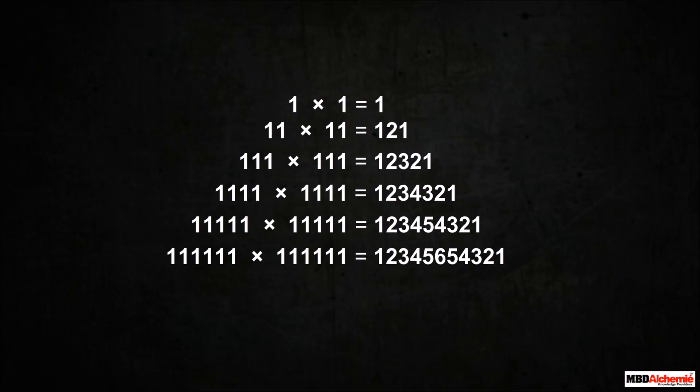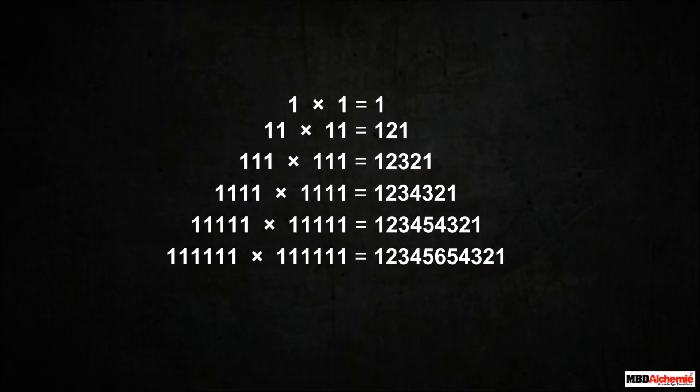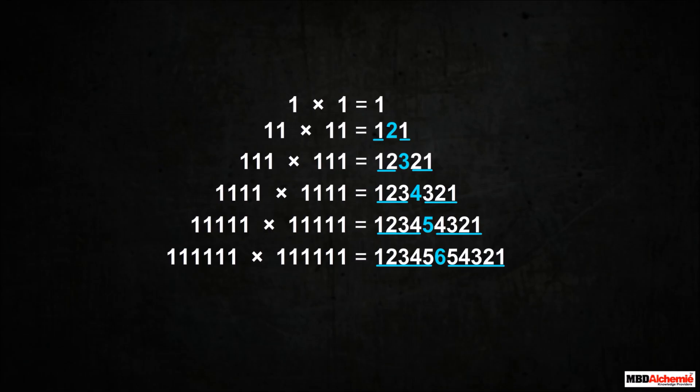Do you observe any pattern in this? First of all, the number of digits in the product is odd in number. Since the digit count is odd, if we pick the middle digit, each side will contain an even number of digits, and those numbers are in reversed symmetrical order. So, all these are some patterns shown by the square numbers.